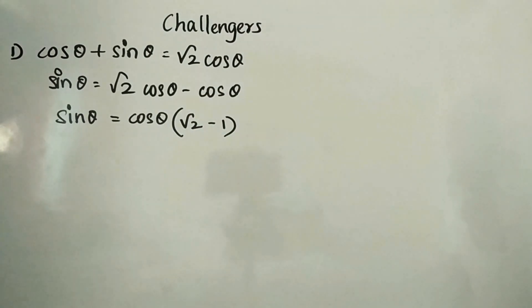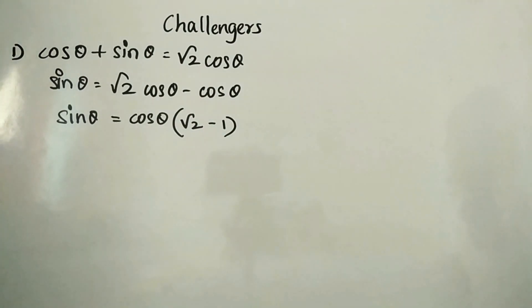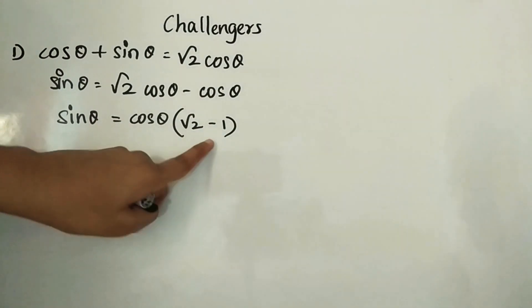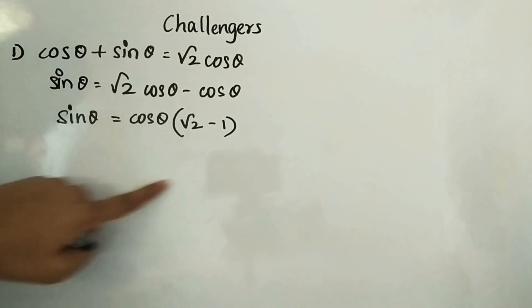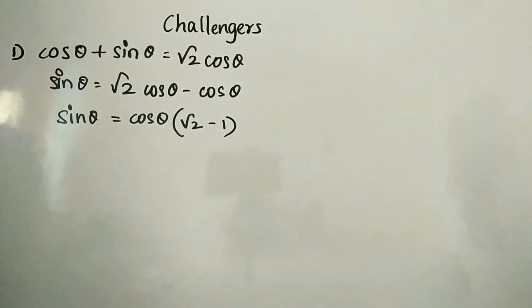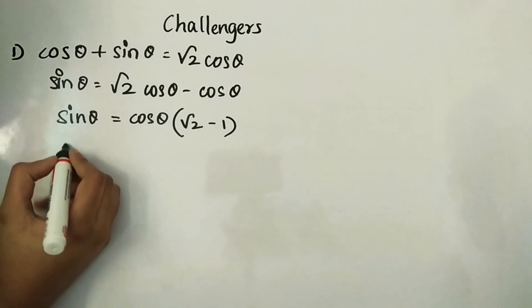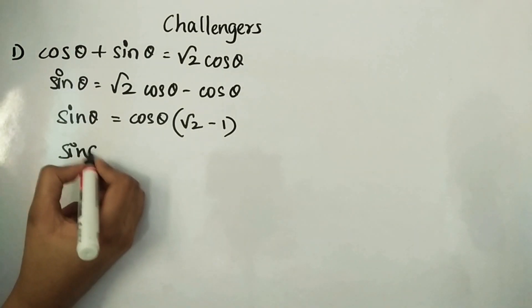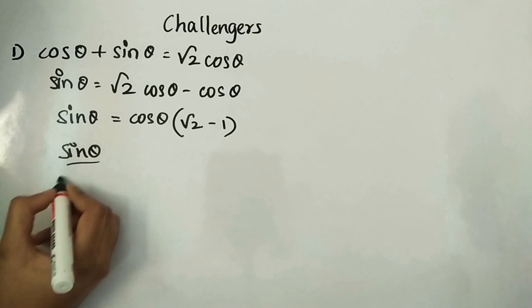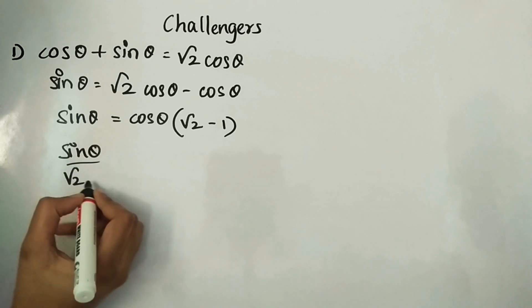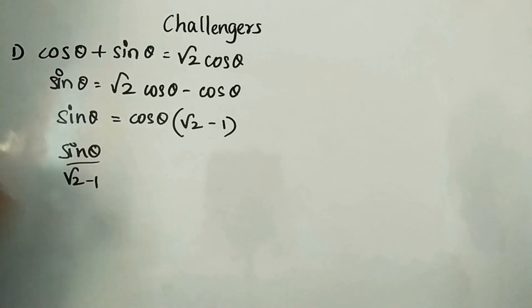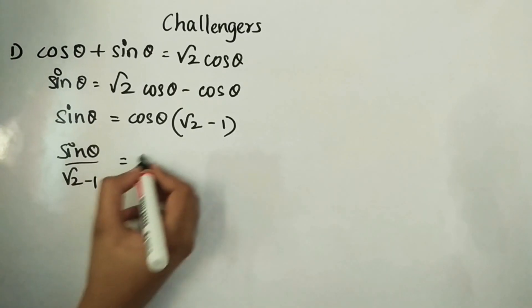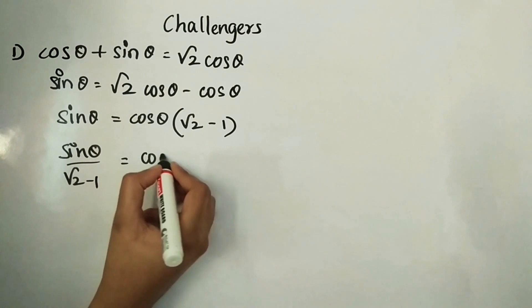In the next step we will bring this (√2 − 1) to the LHS. So sin θ divided by (√2 − 1) is equal to cos θ.